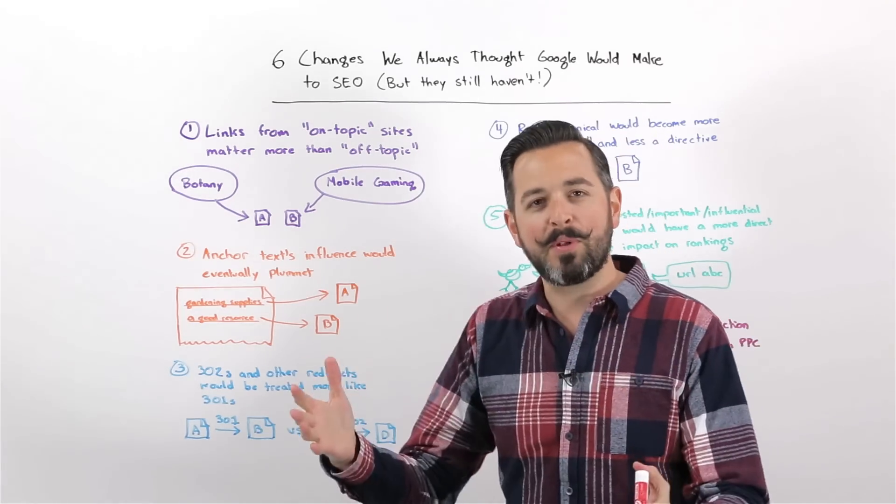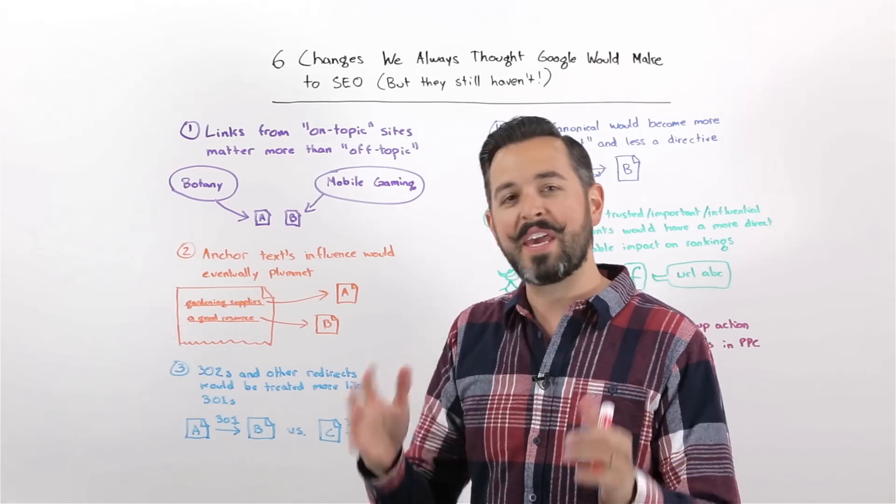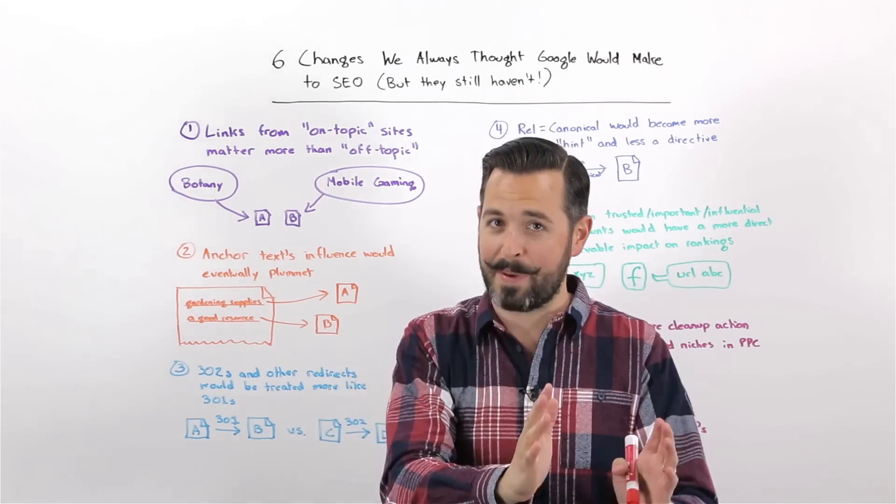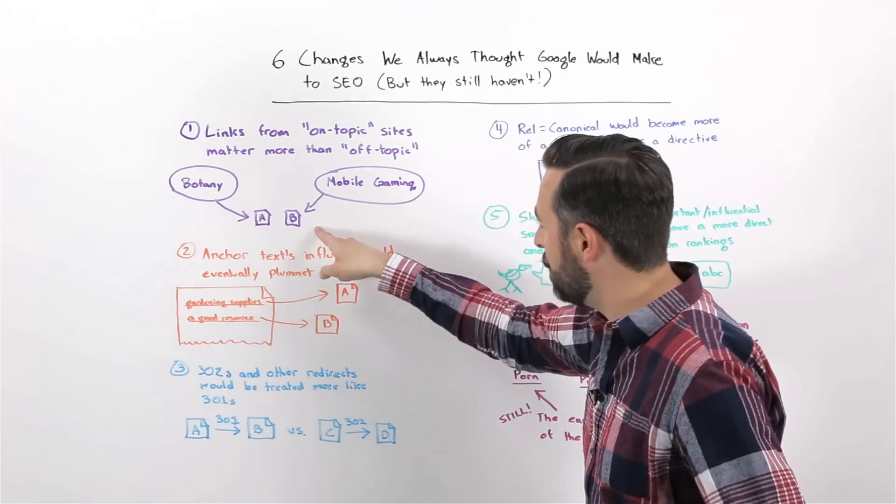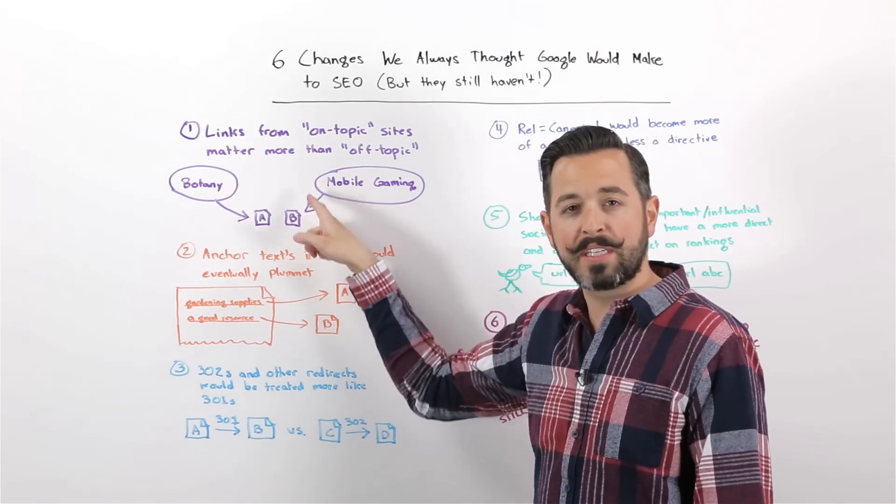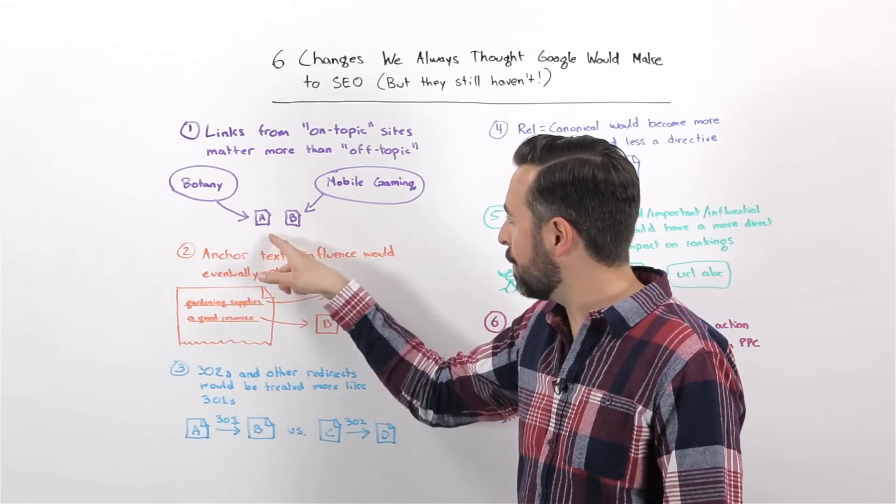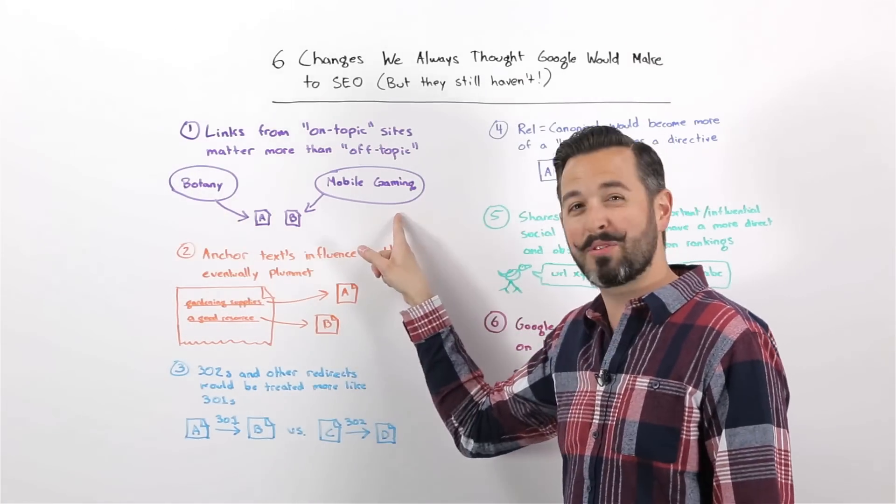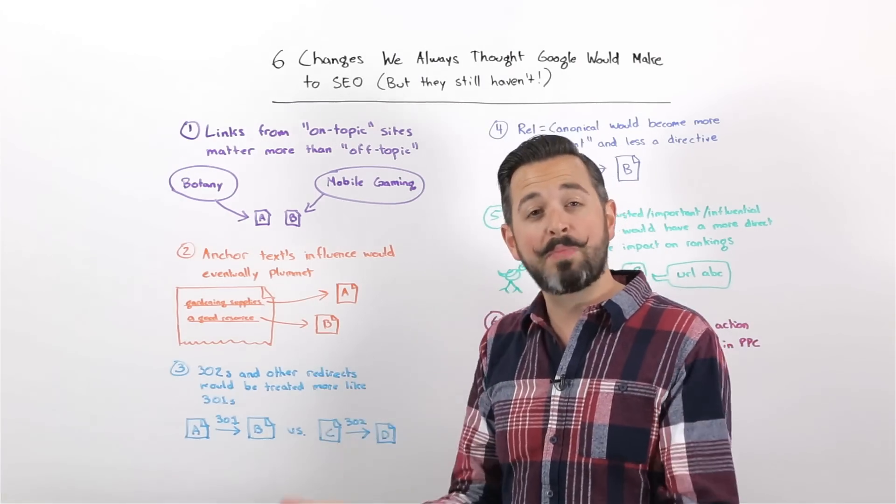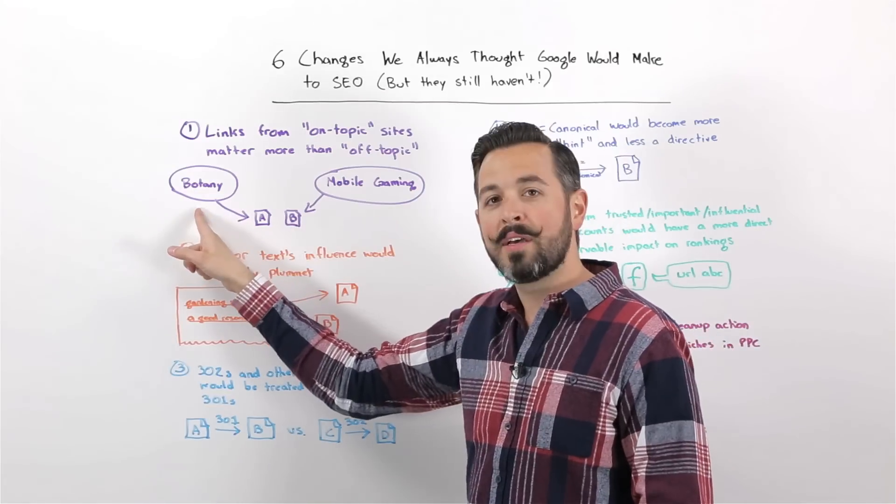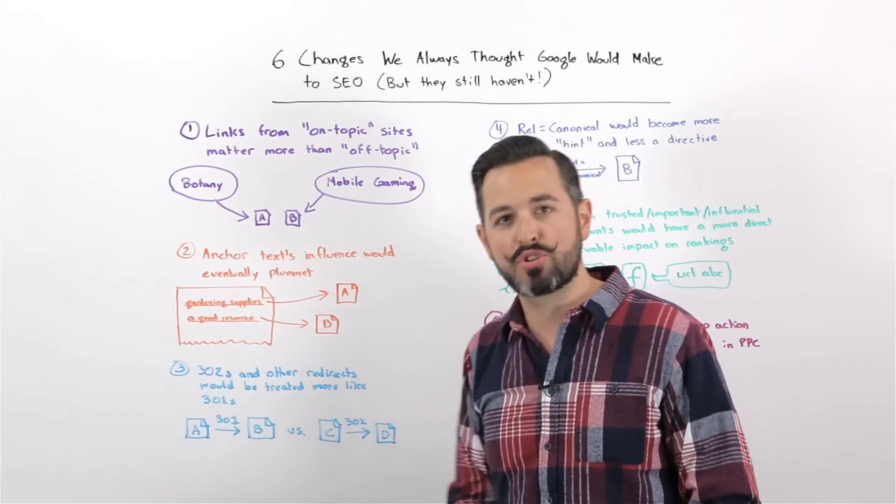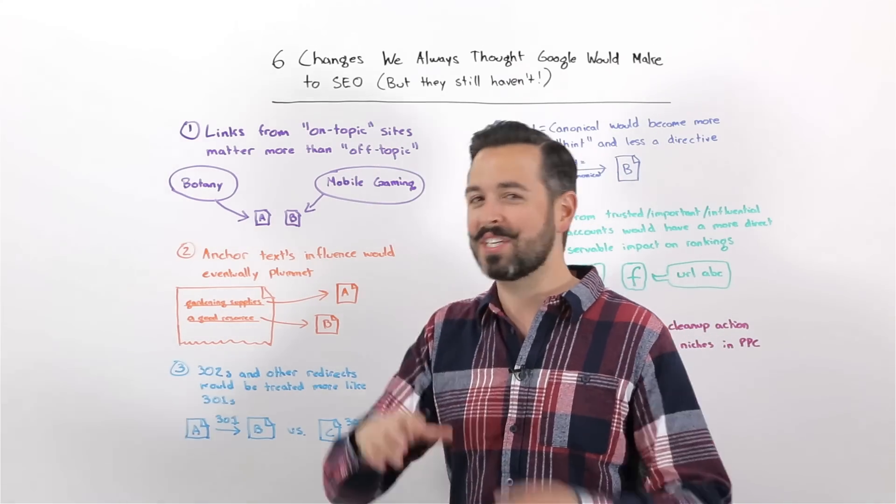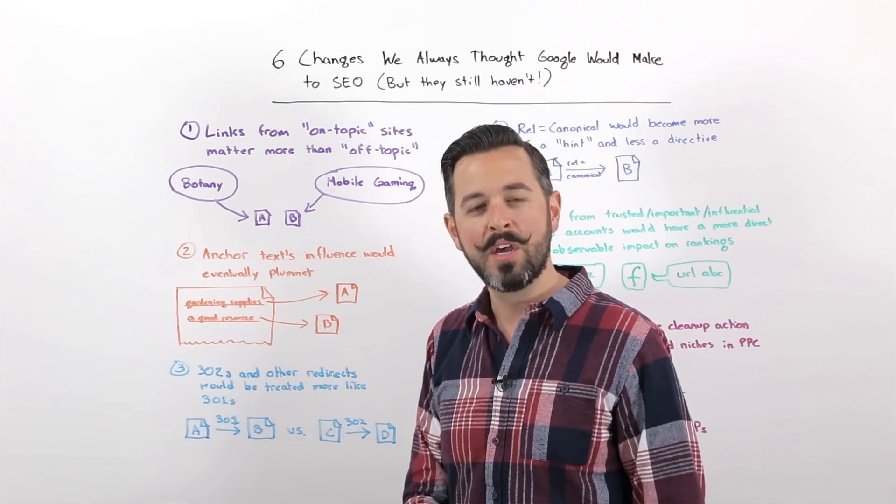So number one, a lot of people in the SEO field, and even outside the field, think that it must be the case that if links really matter for SEO, that on-topic links matter more than off-topic links. So for example, if I'm linking to two websites here about gardening resources, A and B, both about gardening resources, and one comes from a botany site, and the other comes from a site about mobile gaming, well, all other things being equal, it must be that the one about botany is going to provide a stronger link, right? That's just got to be the case. And yet, we cannot seem to prove this.